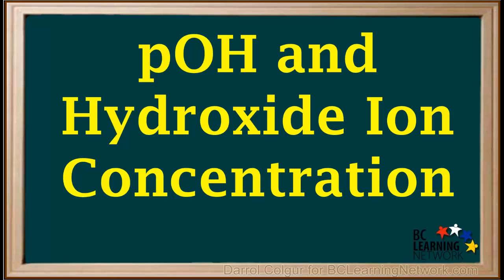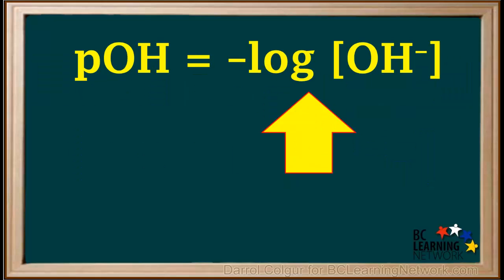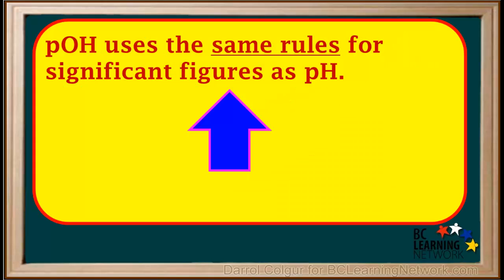Just like pH is a shorthand method of expressing hydronium ion concentration, pOH is a shorthand method of expressing hydroxide ion concentration in a solution. First, we'll go over how to find pOH if we're given the OH⁻ concentration. pOH is defined as the negative log of the hydroxide ion concentration.